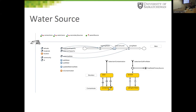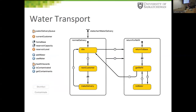The Water Source agent is generalized — it can represent a water treatment plant, a single-house cistern, or a reservoir booster pumping station that pumps water to more distant houses. The Water Transporter is a mobile truck agent: it makes deliveries, has its own tank, refills when empty, then returns to delivering water to houses.